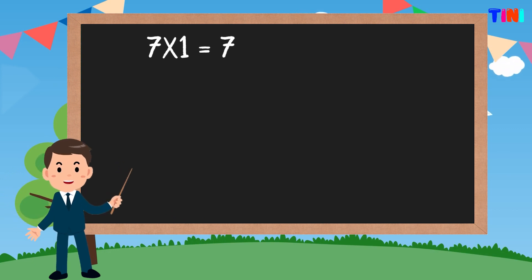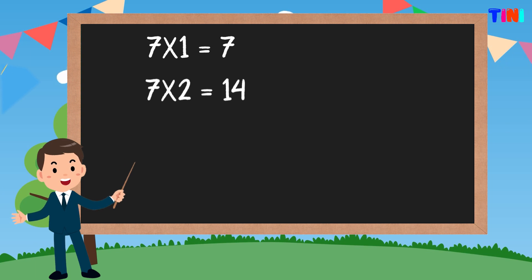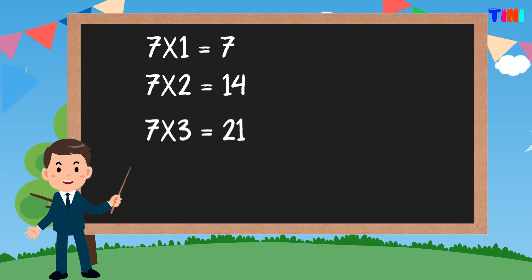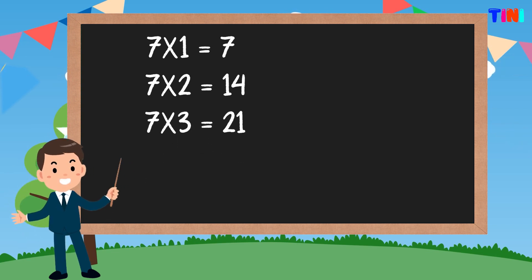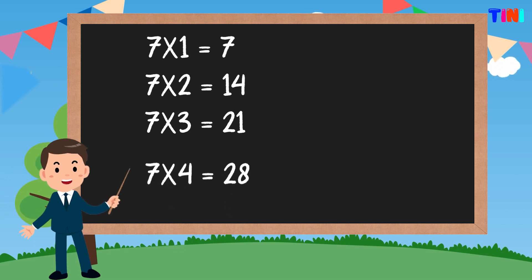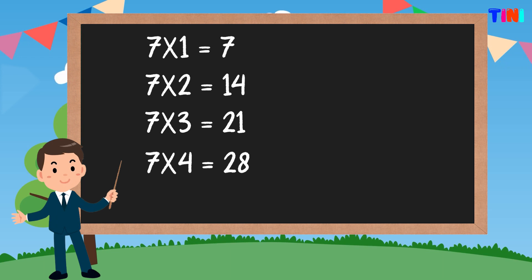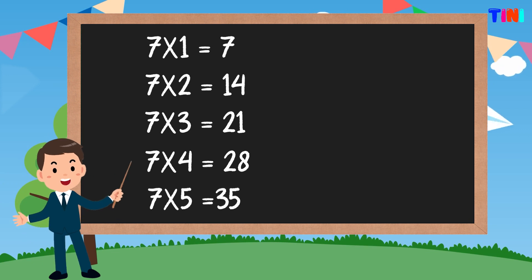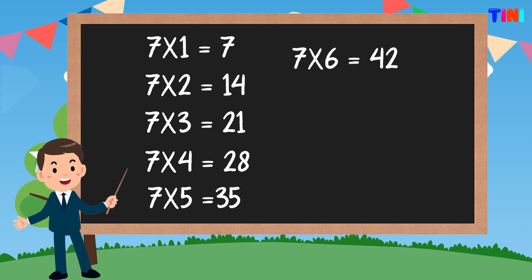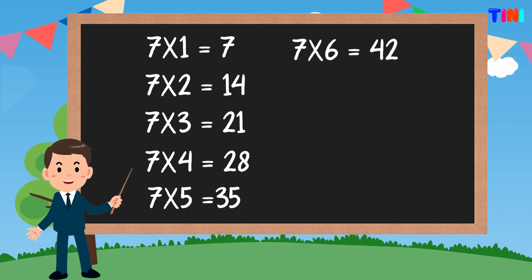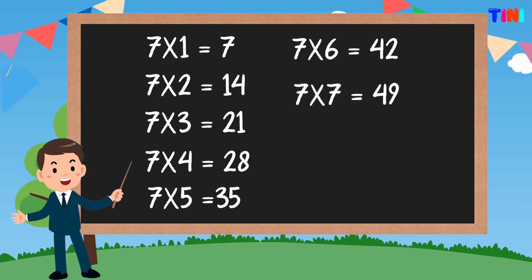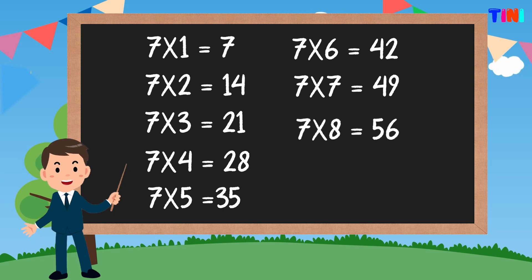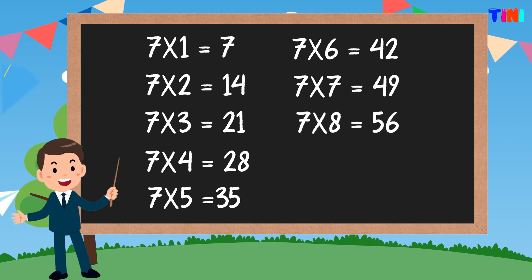7 ones are 7. 7 twos are 14. 7 threes are 21. 7 fours are 28. 7 fives are 35. 7 sixes are 42. 7 sevens are 49. 7 eights are 56.